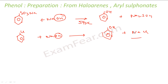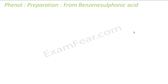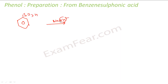The second method is from benzene sulfonic acid. I have benzene sulfonic acid (SO₃H). I add NaOH — it's a very strong nucleophile — it will replace the SO₃H group. It gives me OH, and this is phenol.